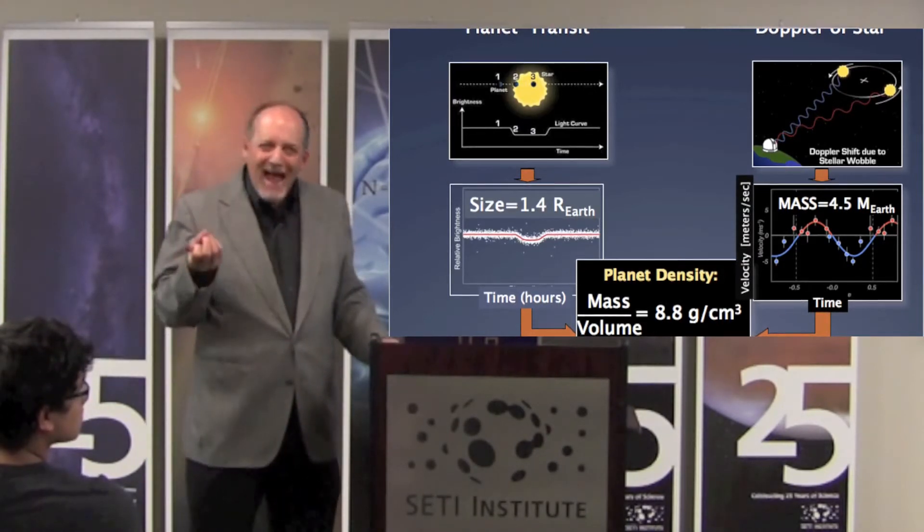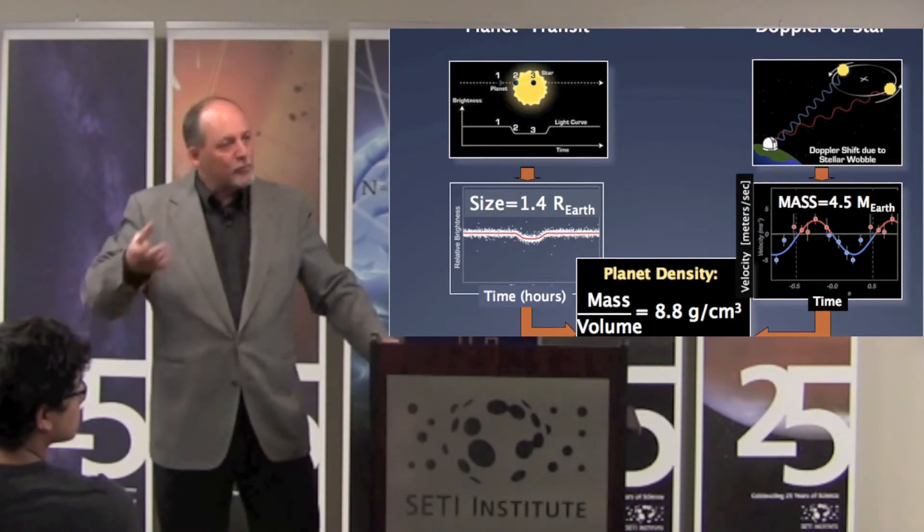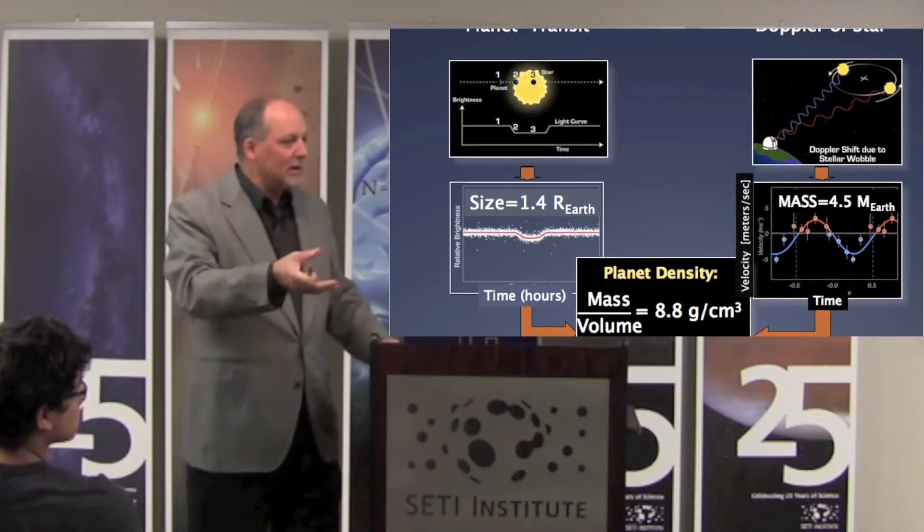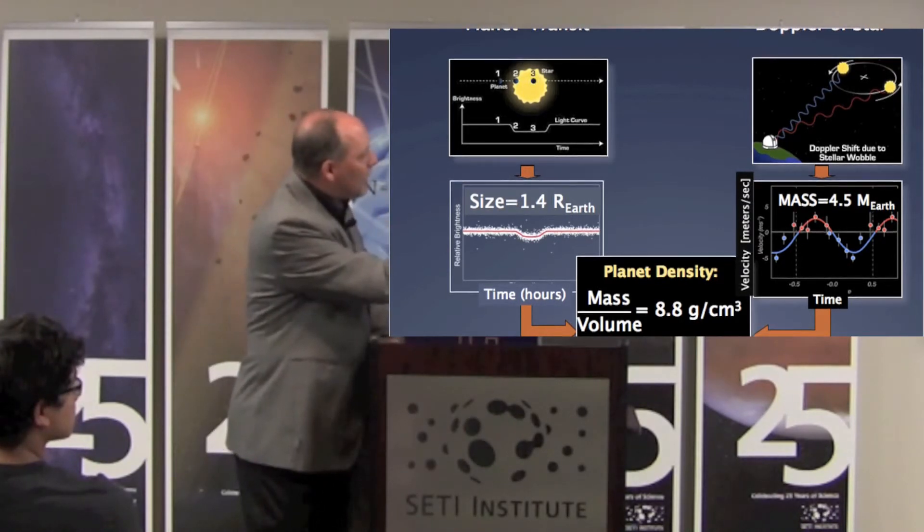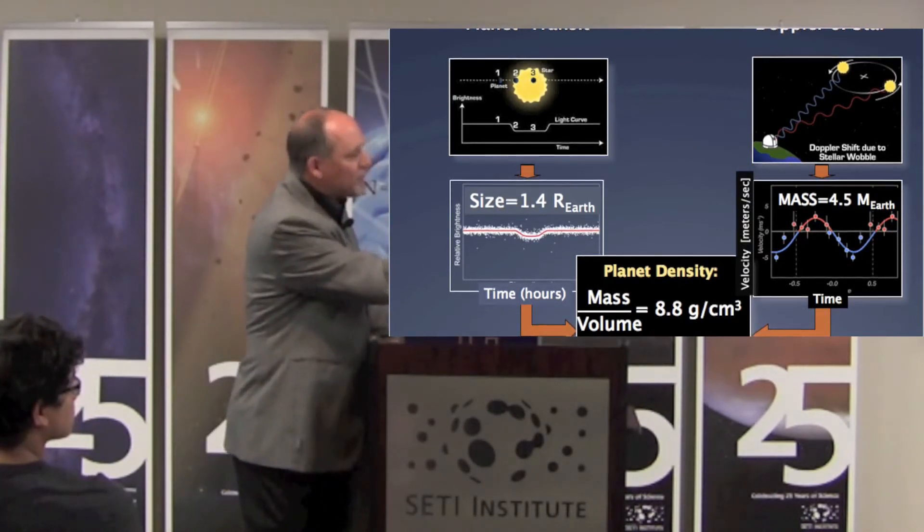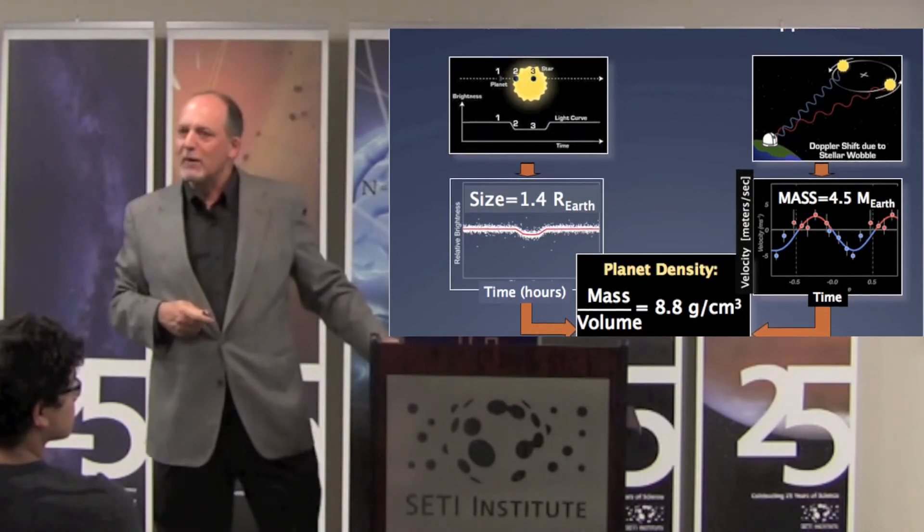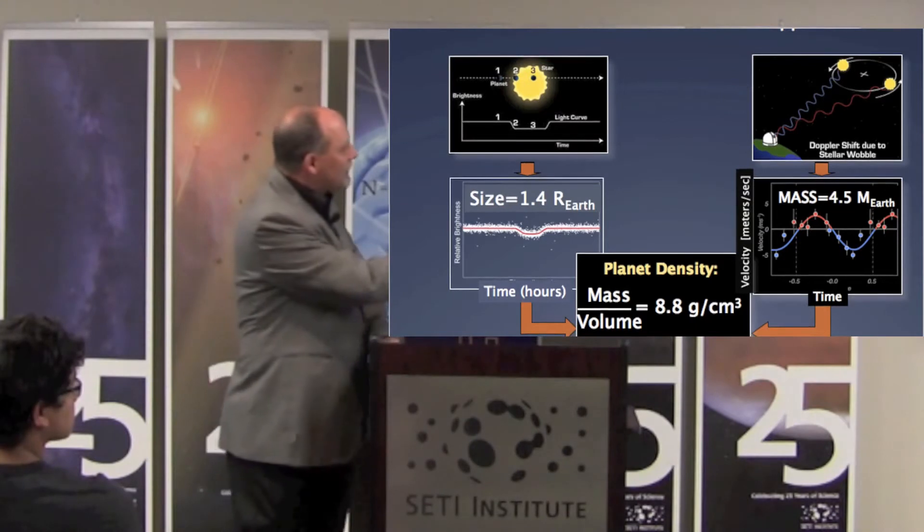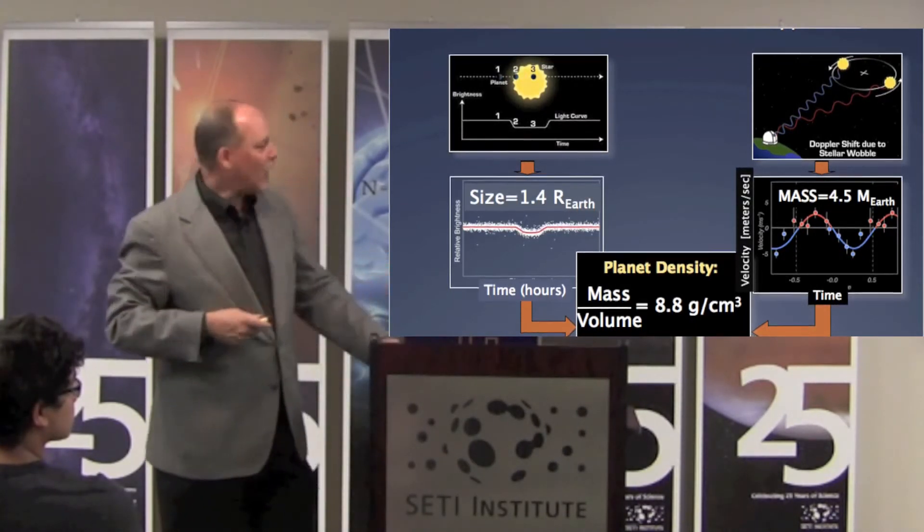And that tells us the mass of the planet. Because of course the more mass of the planet, the more strongly it yanks gravitationally on the star. And you can use Newton's laws of physics and you get 4.5 times the mass of the Earth. So now we know two things about this planet: its size in radius and its mass based on the Doppler measurements.